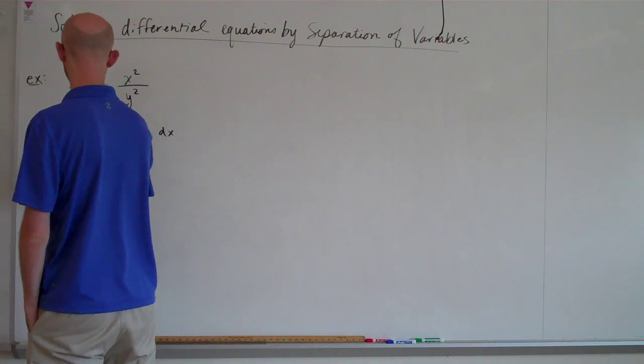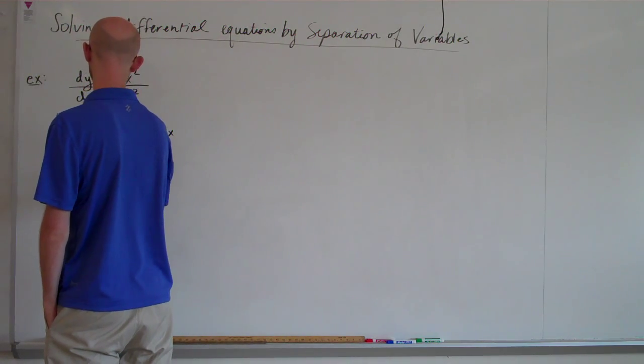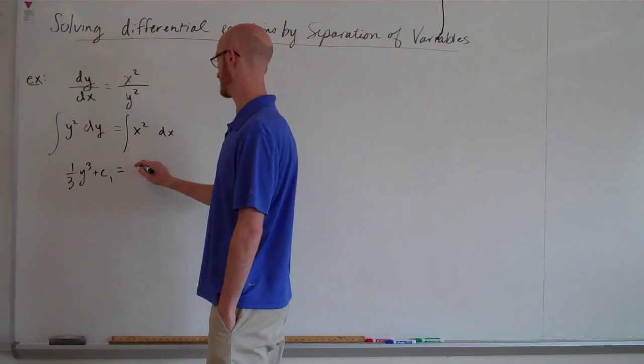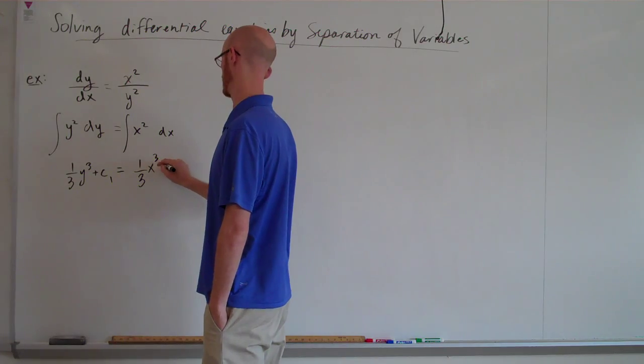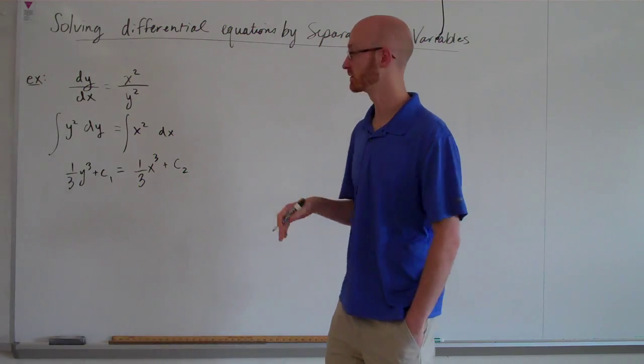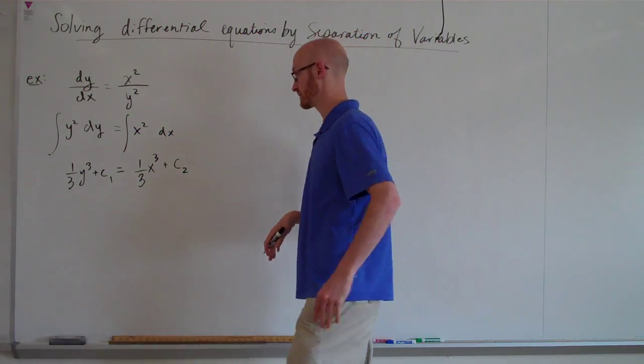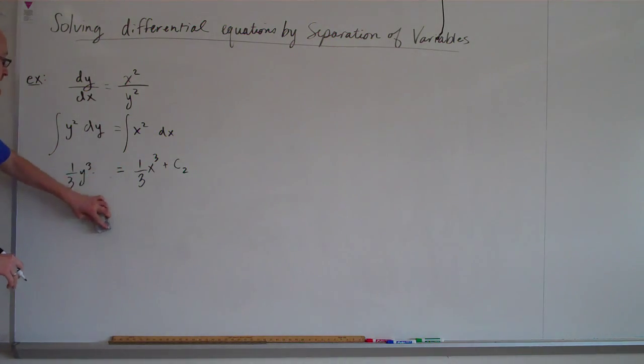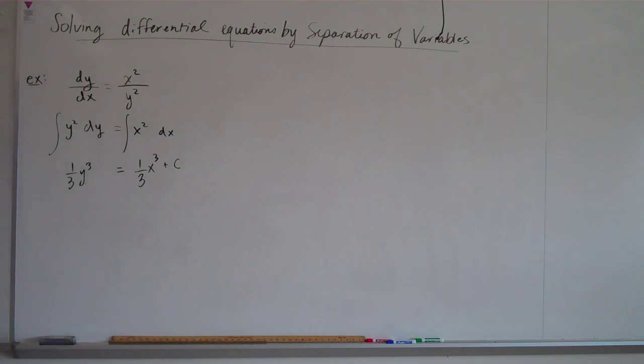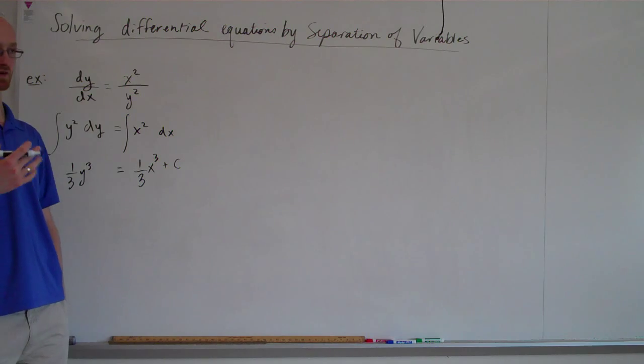So over here you get 1 third y cubed plus c, and I'll call that one c sub 1. And here you get 1 third x cubed plus c sub 2. Now, I'm giving them two different values, c sub 1 and c sub 2. But if we were to collect them to one side of the equation, I'll just call that thing c.